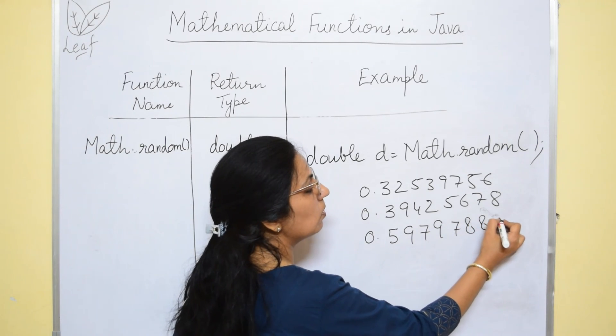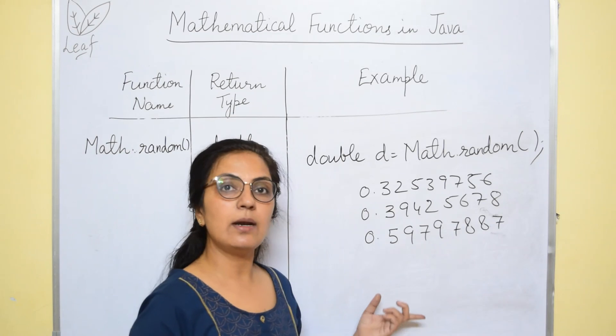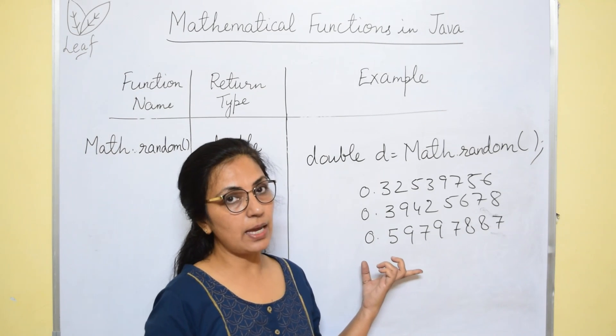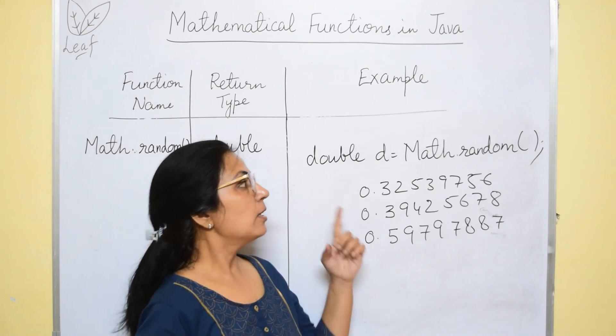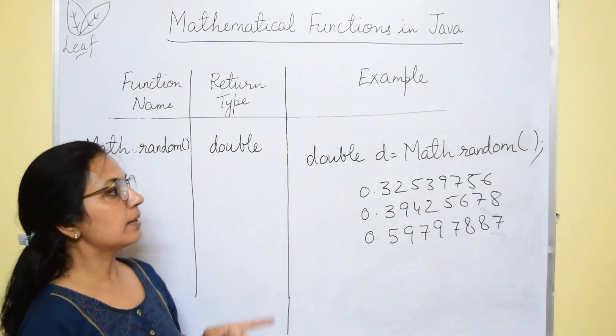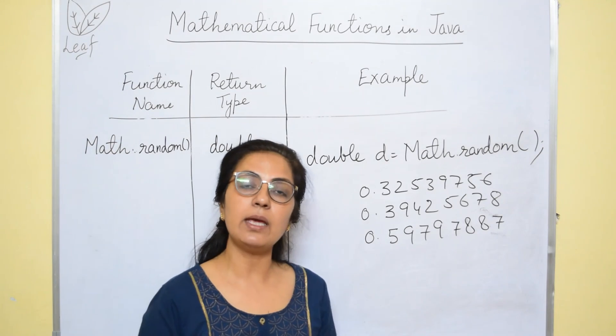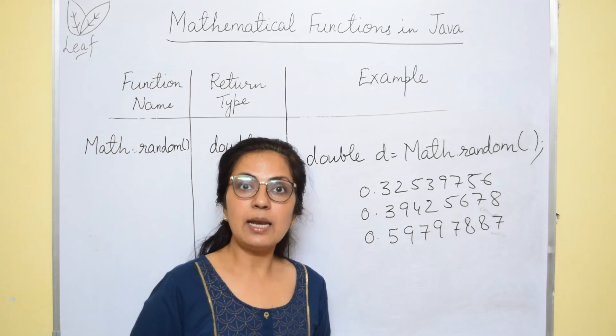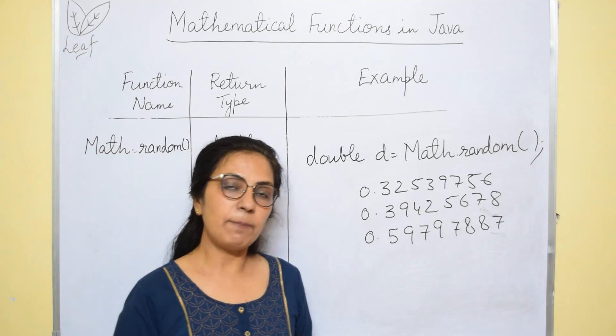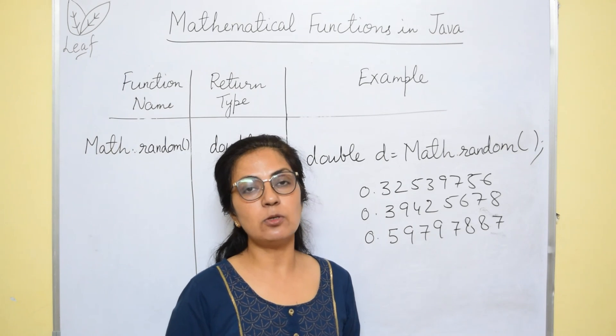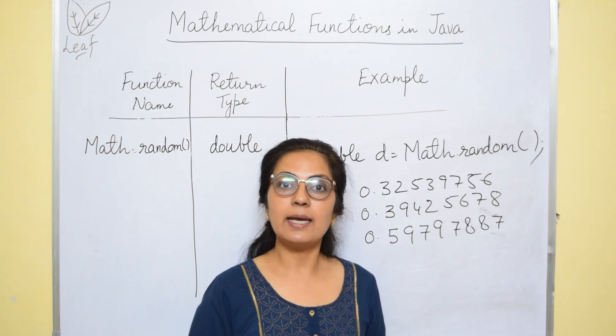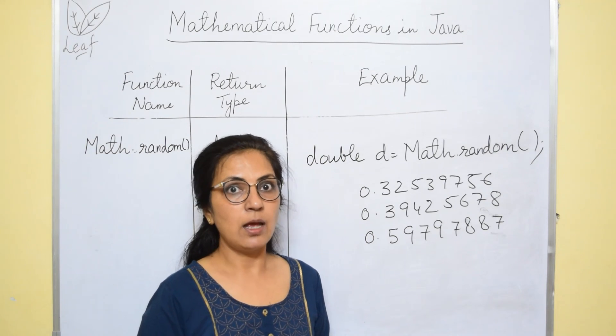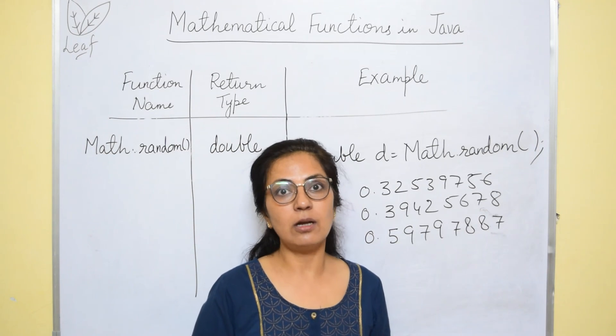Every time you use this function, the return value will be different which will range between 0 and 1. So random function generates a number randomly between 0 and 1. Again, I am telling you, there is a PDF in the description box, please download it. And in the next video, we will do some questions based on this. So all the best, God bless you.